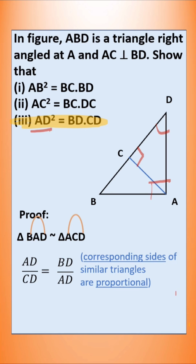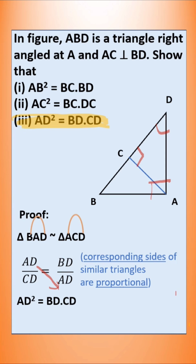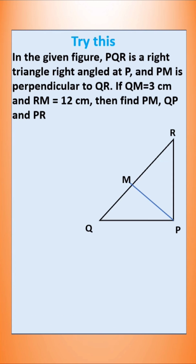Now let us cross multiply: AD squared is equal to BD into CD. This is what we needed to prove. Hence, the third problem is proved. Now you can try this one.